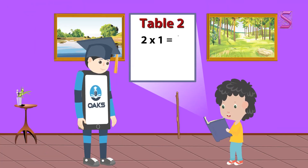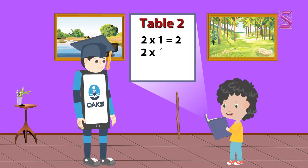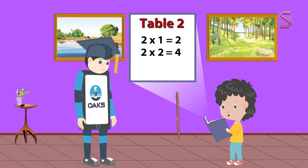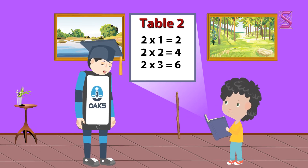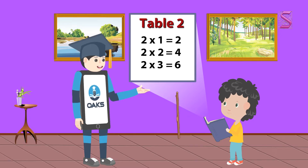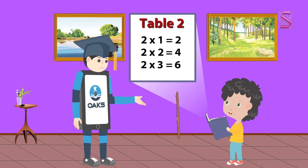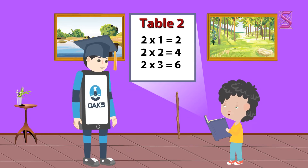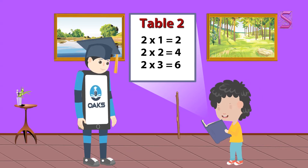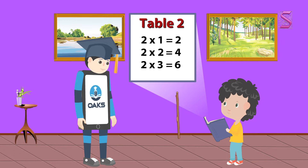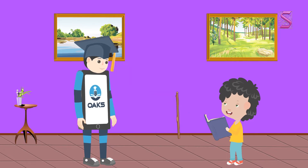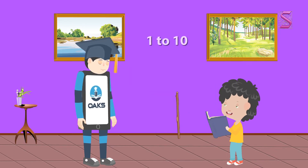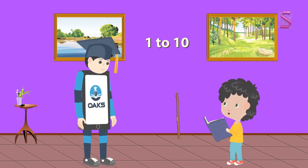2 one times is equal to 2, 2 two times is equal to 4, 2 three times is equal to 6. Hey Chintu, what are you reading out so loud? Hi Oaks, I am learning multiplication tables — Table 2. My teacher told me to learn tables from 1 to 10.